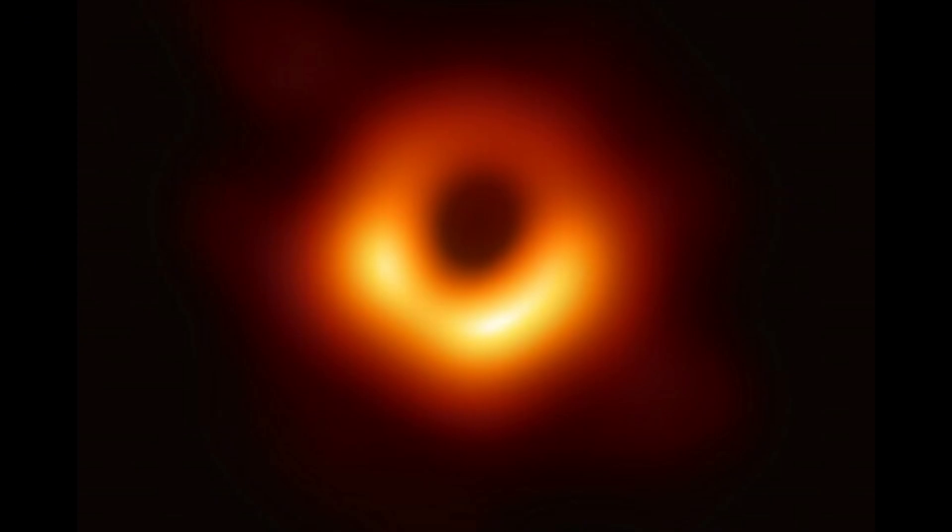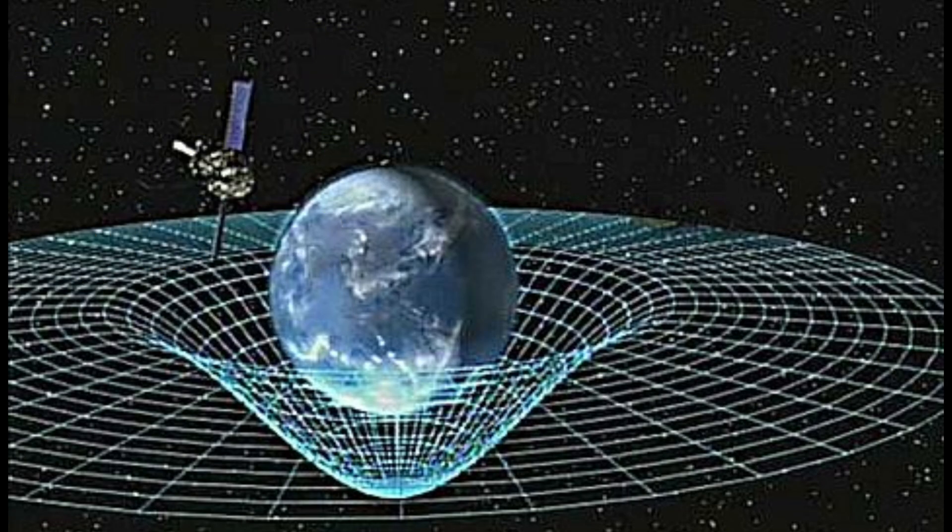The gravitational singularity predicted by general relativity to exist at the center of a black hole is not a phase of matter. It is not a material object at all, but rather a property of space-time.